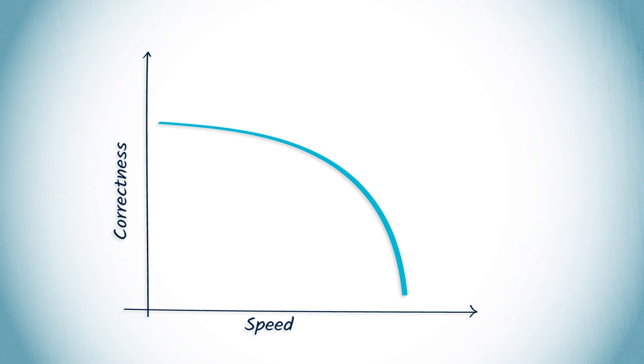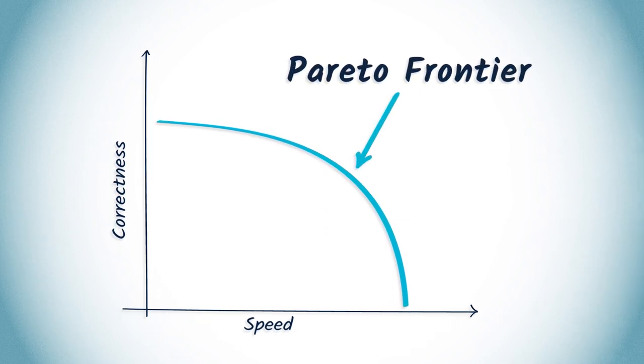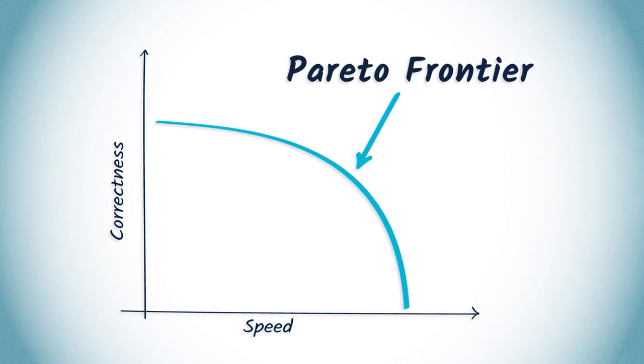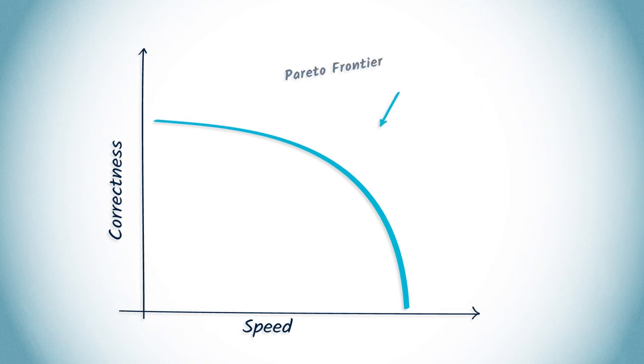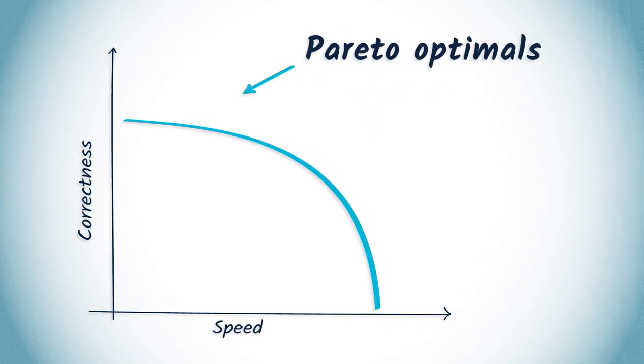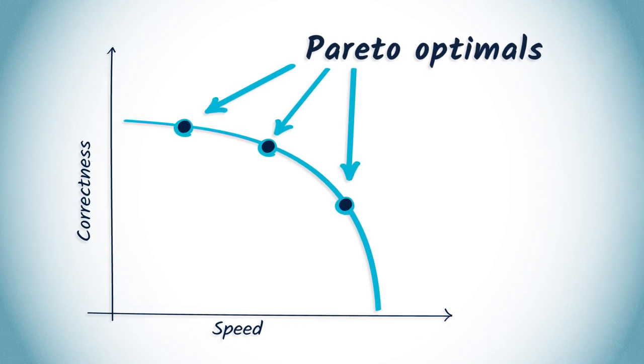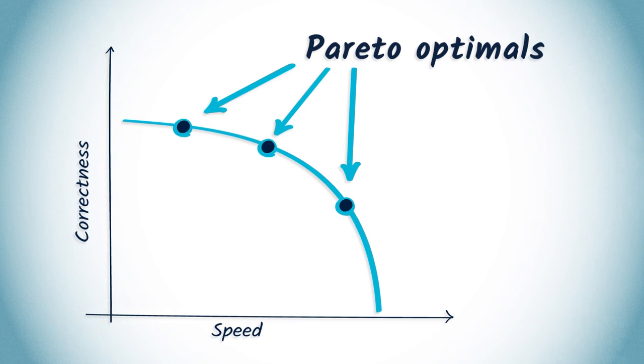We have to sacrifice speed, correctness, or a bit of both. This kind of trade-off is often referred to as a Pareto frontier, which we can define as follows: what's the fastest algorithm we can find to solve a problem with a given amount of correctness? We call Pareto optimal a point lying on a Pareto frontier, meaning it corresponds to an optimal trade-off between speed and correctness — typically depending on the relative importance of two or more parameters, such as the size of the problem.